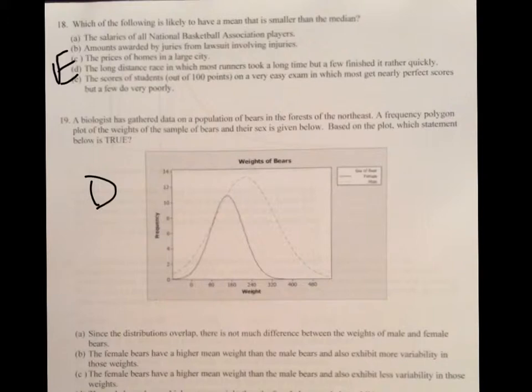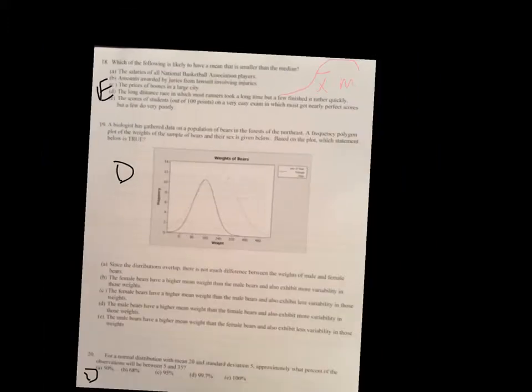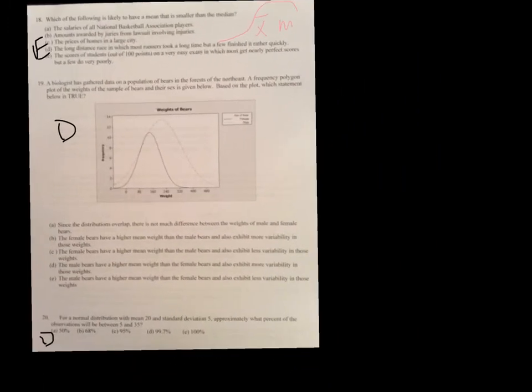Okay, number 18, which of the following is likely to have a mean that is smaller than the median. Well, if it's looking for an average that is smaller than the median, we're going to look for this right here. That means it's going to be skewed to the left. So, in this case, the answer choice is E, the scores of students on a very easy exam, in which most get nearly perfect scores. So, if you have a graph of exams, here's your exams, and here's 100, here's 0, and if most everybody is right here, and not very many people scored lower grades, that's why you're going to have a skew to the left.